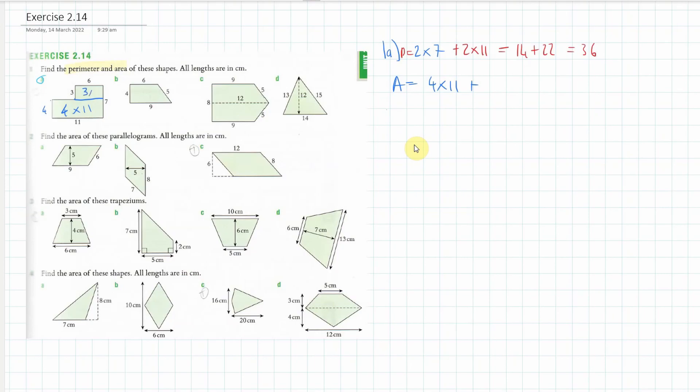Remember this bit here was 4, so the bottom rectangle is 4 times 11, and then this top bit here is 3 multiplied by 6. So this gives us 44 plus 18, and that's 62 centimeters squared.